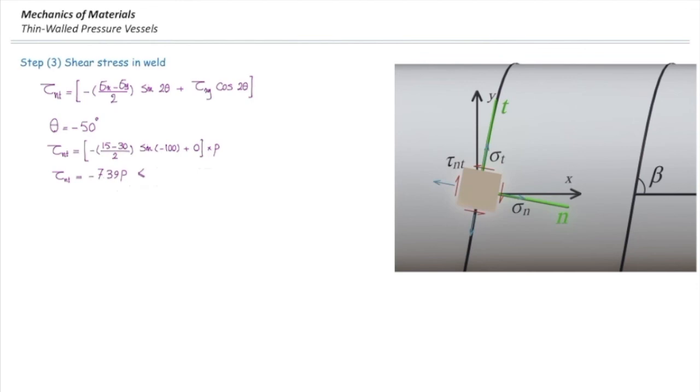That is the shear stress parallel to the welding. And that should be smaller than the allowable shear stress, which is 25 megapascals. If I solve it for p, we get 3.38 megapascals or 3380 kilopascals.